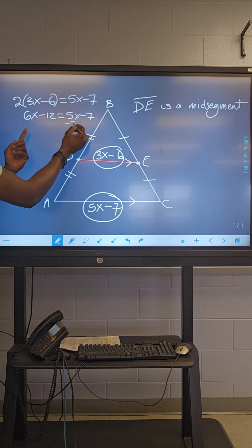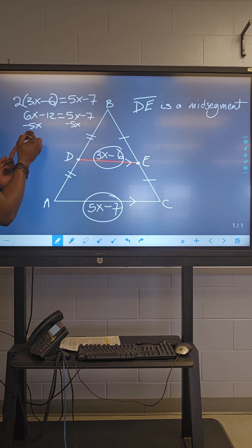Then, collecting X on both sides, subtracting 5X. So, X minus 12 is equal to minus seven.